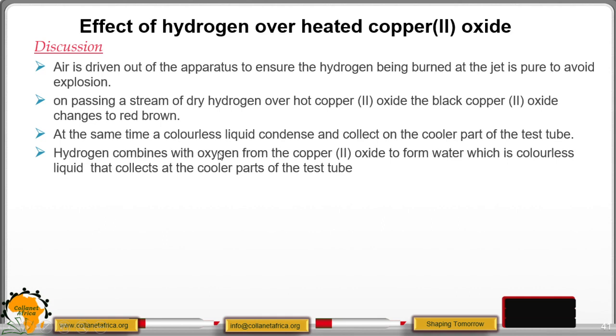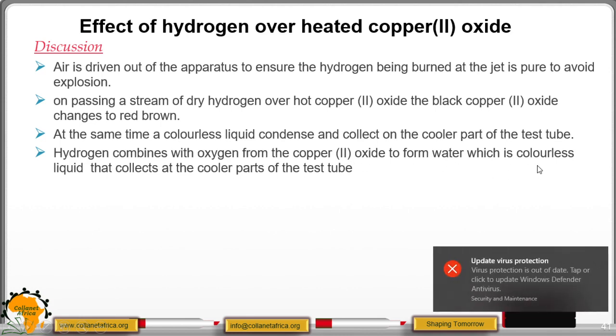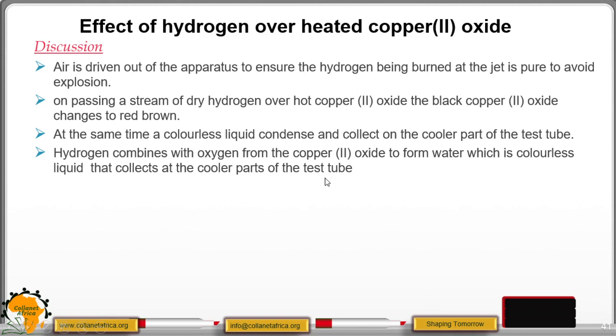Hydrogen gas combines with oxygen from the copper oxide, or it displaces oxygen from the copper oxide to form water, which is a colorless liquid that collects at the cooler parts of the test tube. The red brown is copper metal.